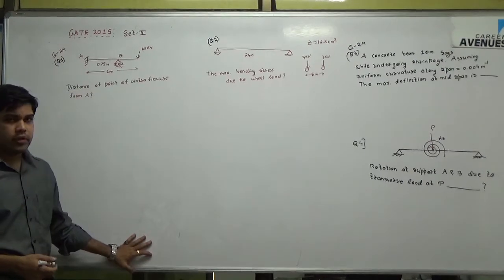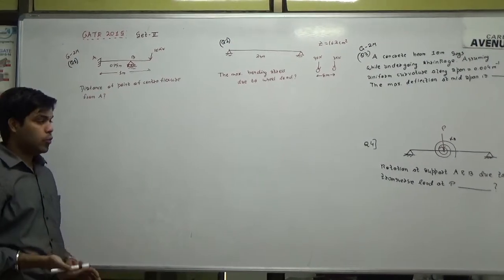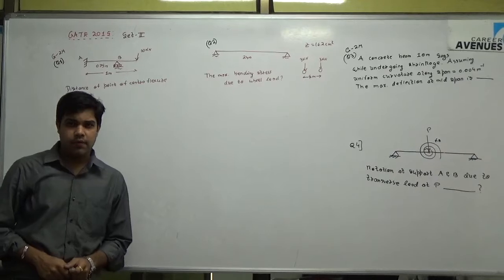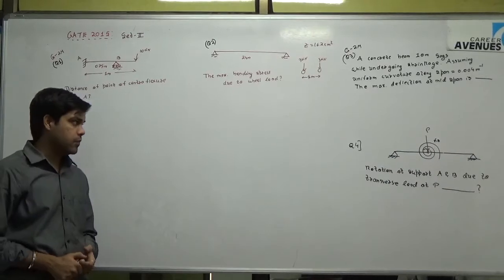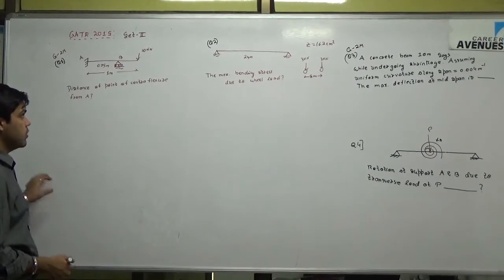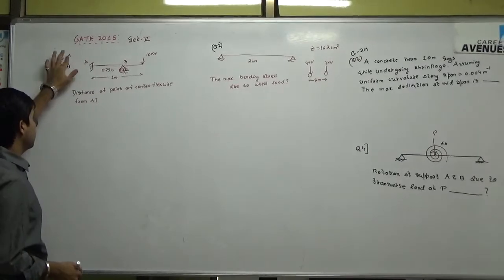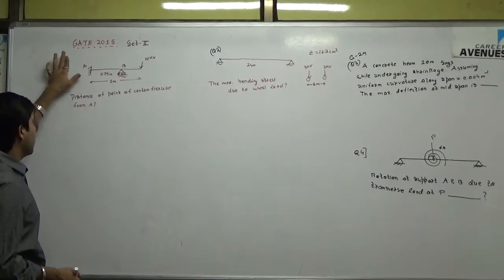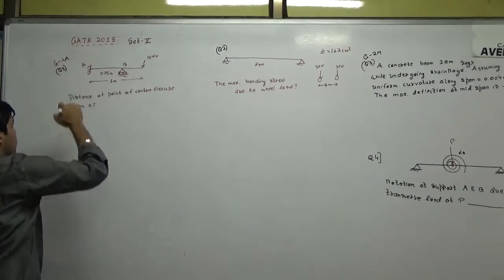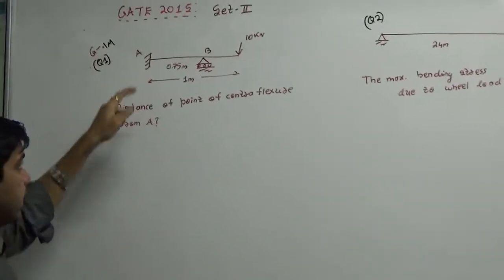In this video we are going to see the 2015 Set 2 paper. In total there were 6 problems. I have taken 4 problems here in the GATE 2015 Set 2 papers on structures. The very first problem was of one mark only and it was asked to find out the distance of the point of contraflexure from point A.